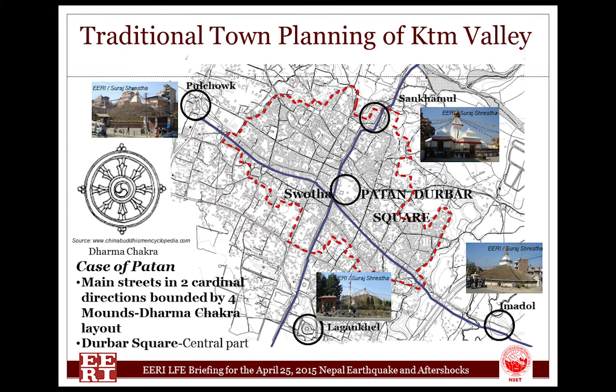I would like to start my presentation from the traditional planning of towns of Kathmandu Valley. Traditionally, Kathmandu Valley was composed of three towns: Kathmandu, Barton, and Bakhtapur. Among the three towns, I would like to take an example of Patan.